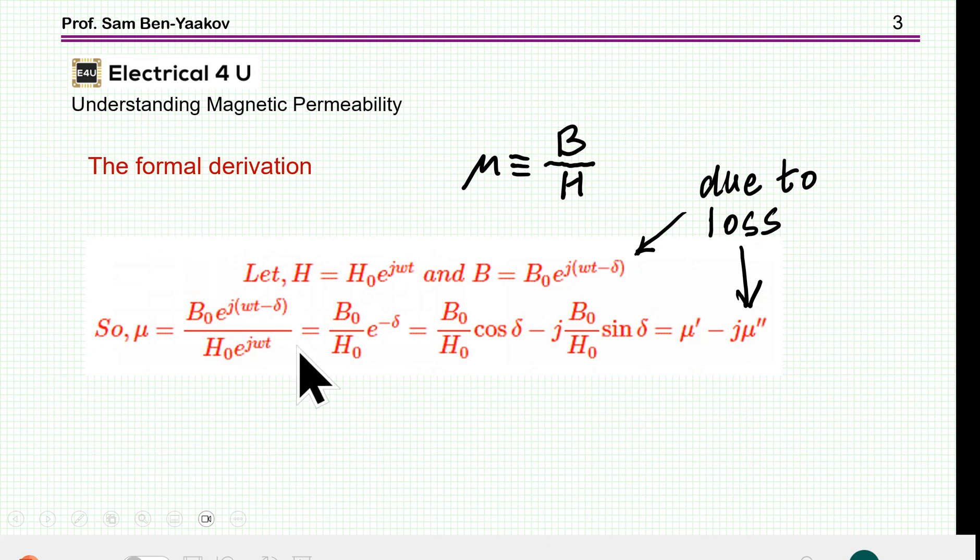Now, to save typing, I've copied this section here from Electrical4U website. Here is the post Understanding Magnetic Permeability, and it is based on the fact that the definition of the permeability is the ratio between B, that is the magnetic flux density, and H, magnetic field. This is the definition of permeability, or permeability times H is B.